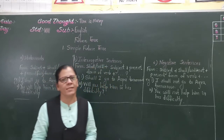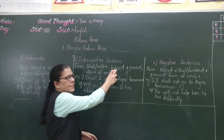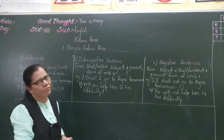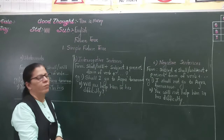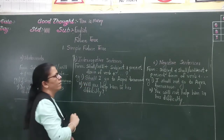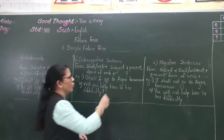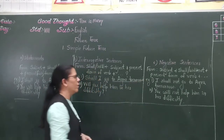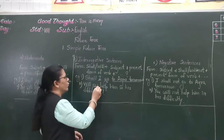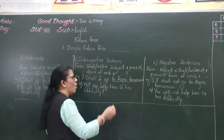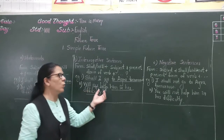Now let us see the form in interrogative sentences. The form is: shall or will plus subject plus the present, that is the first form of verb, plus remaining part of sentence. For example: 'Shall I go to Agra tomorrow?' Second example: 'Will you help him in his difficulty?'